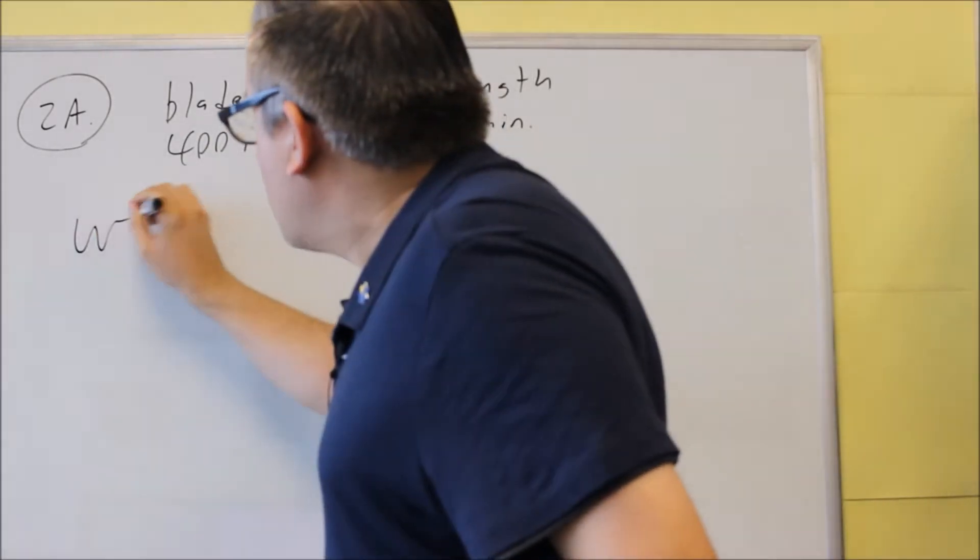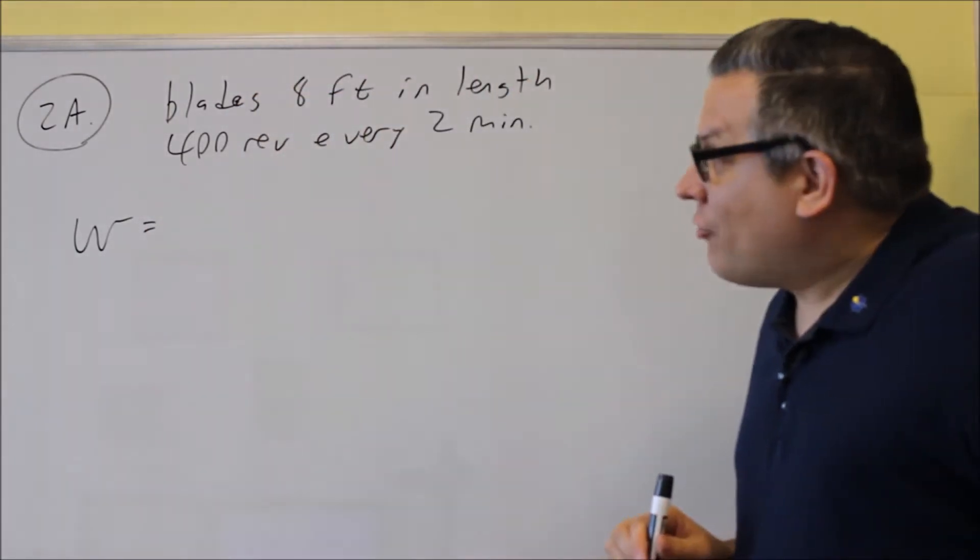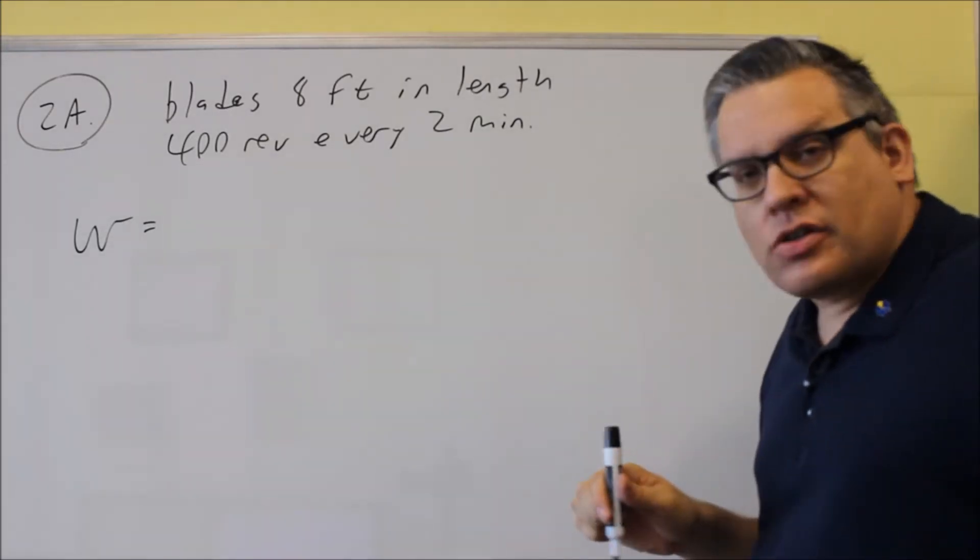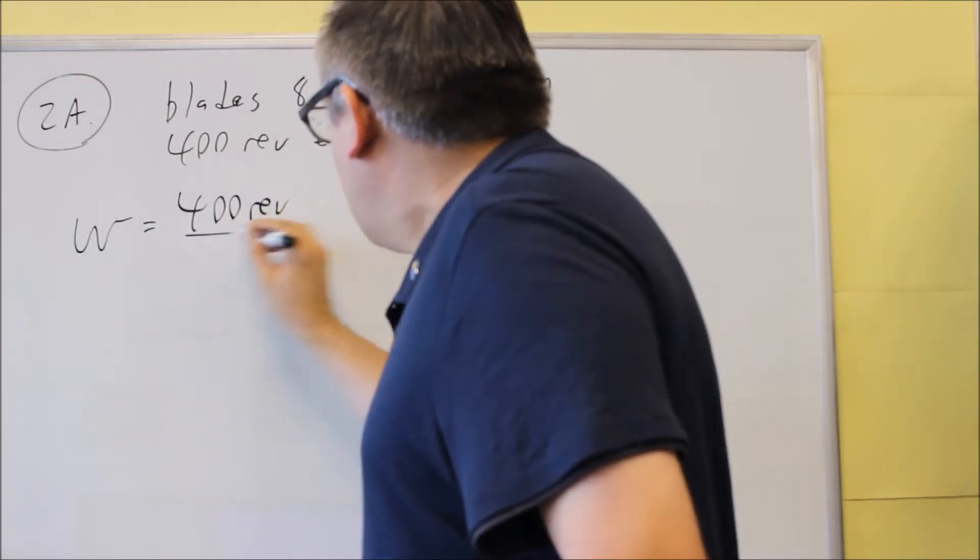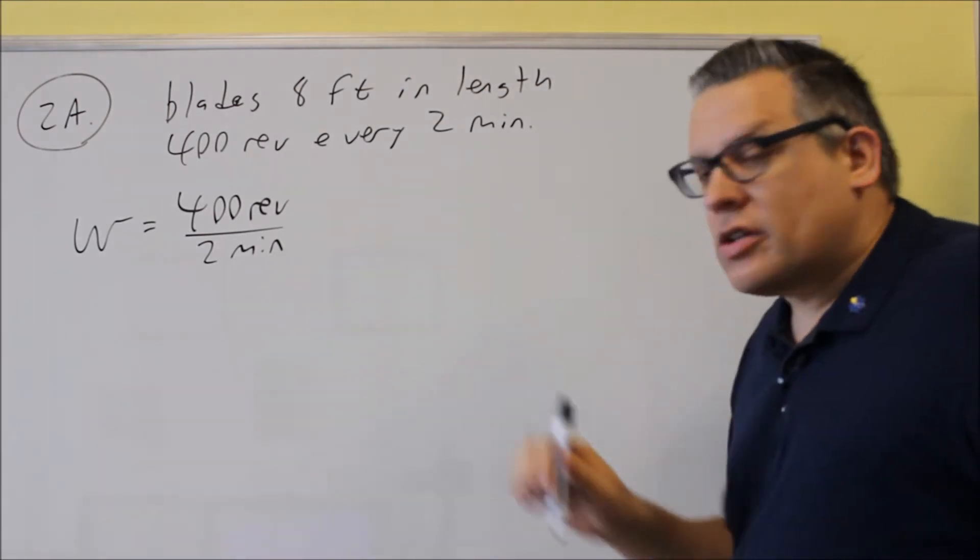So we want to find first of all angular speed, this is omega, that we're finding first. Now what we're given is this here, 400 revs every two minutes. I'm going to write that just like this. So 400 revs for two minutes.